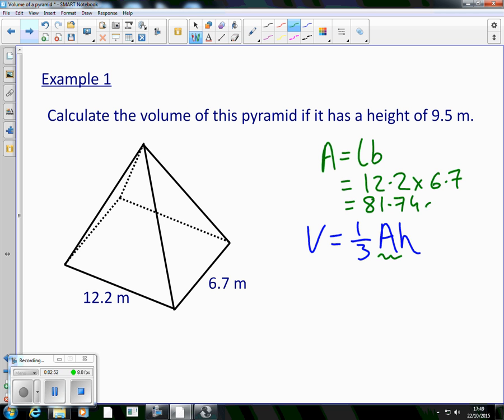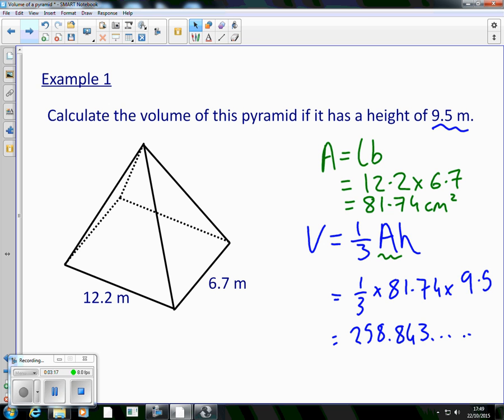Area, so meters squared. And then we can use that area in our formula. It's a third multiplied by 81.74 multiplied by the height, which from the question up here tells us is 9.5. So if we type that in our calculator, we should get the answer 258.843 and so on. Looking at it, let's do two sig figs for a wee change. So there's my first sig fig, my second sig fig, and then eight rounds up. So it's going to be 260 to two significant figures. So I've said centimeters, it's not as meters. Sorry about that.